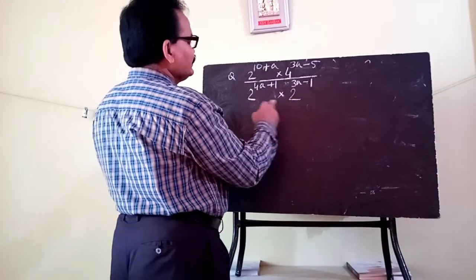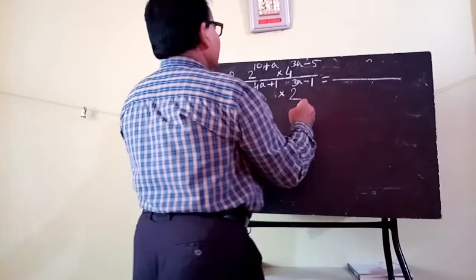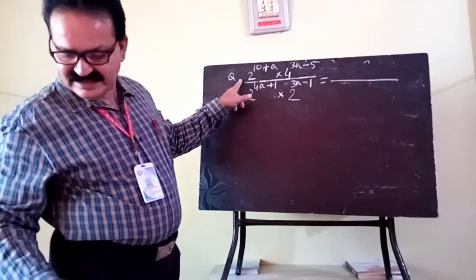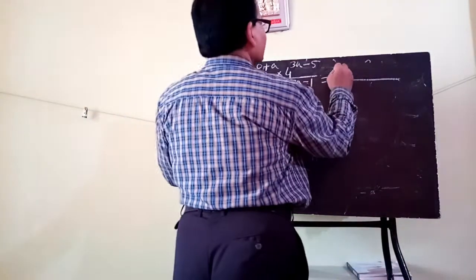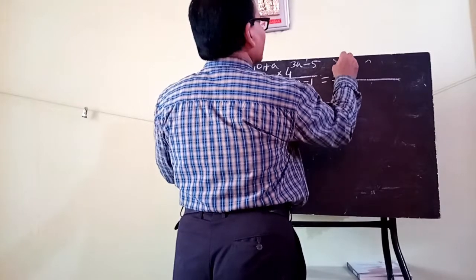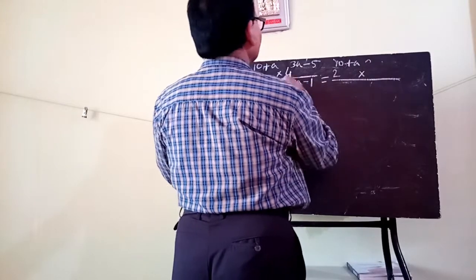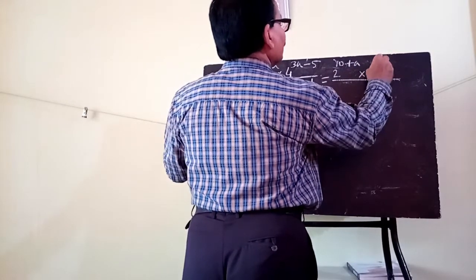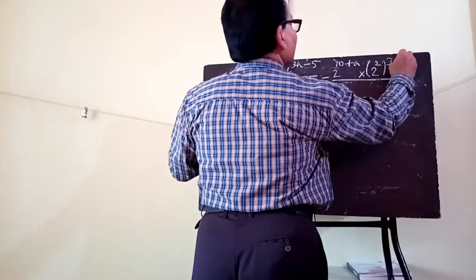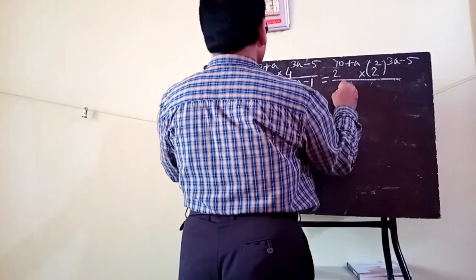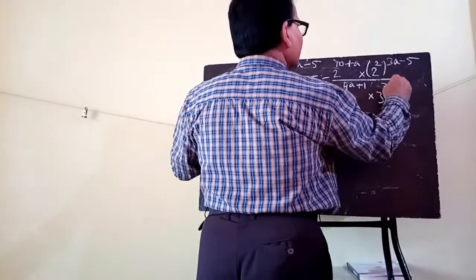All bases are of 2, so convert everything. In the numerator: 2 to the power 10 plus a, into 4 written as 2 to the power 2 with outside power 3a minus 5. In the denominator: 2 to the power 4a plus 1, into 2 to the power 3a minus 1. Now add the powers in the numerator — 10 plus a plus 2 times 3a minus 5 — which gives 2 to the power 10 plus a plus 6a minus 10. In the denominator: 2 to the power 4a plus 1 plus 3a minus 1.